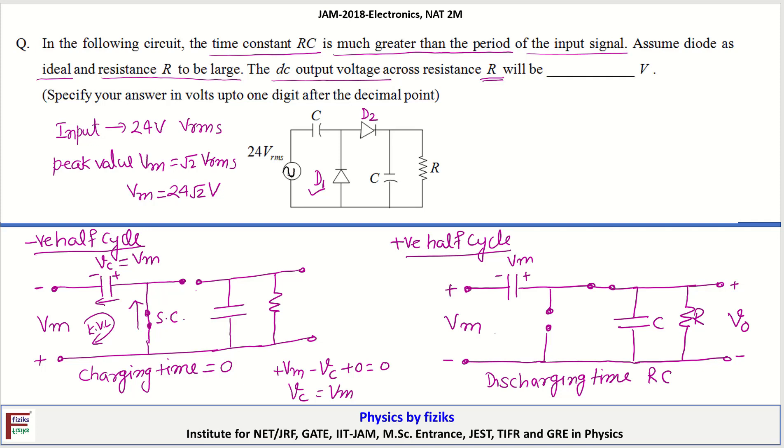So we can easily find output voltage. If we apply KVL in this loop we will get minus Vm minus Vm plus Vo is zero. So Vo is 2Vm. So output voltage is 2Vm that is 2 into 24 root 2 volt and this will be 68 volt.